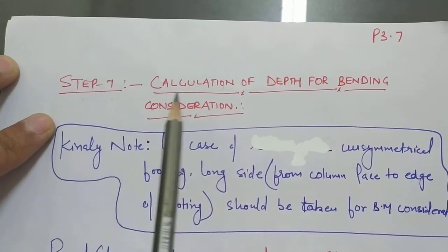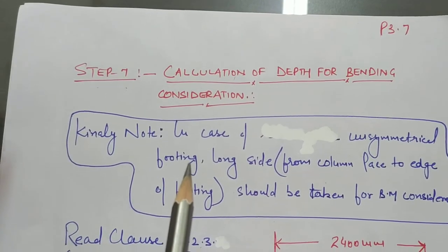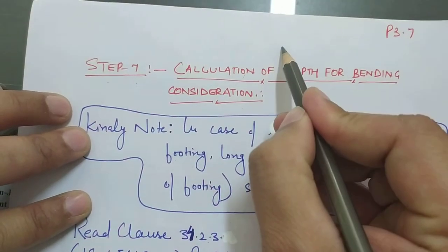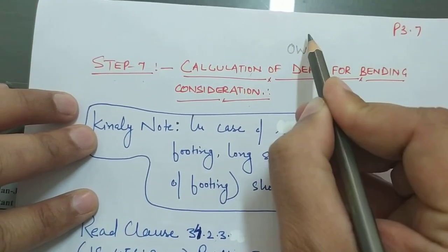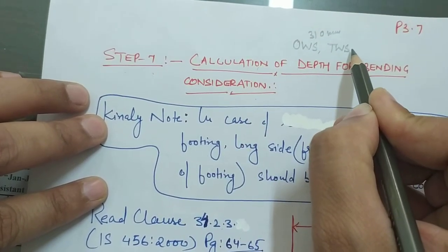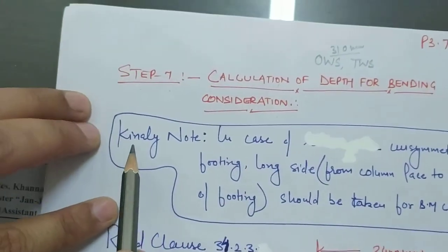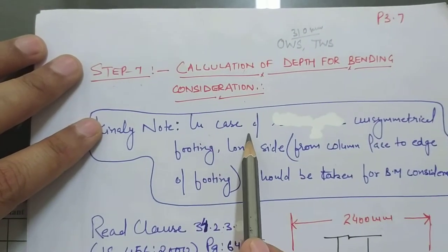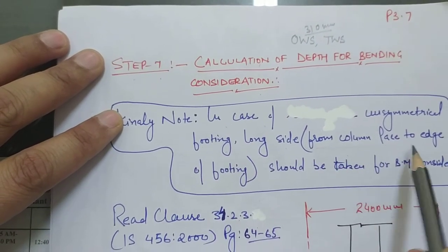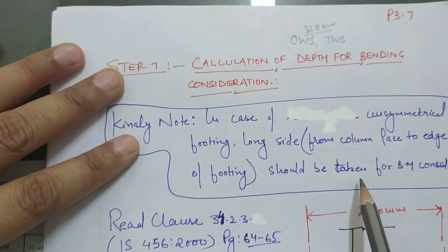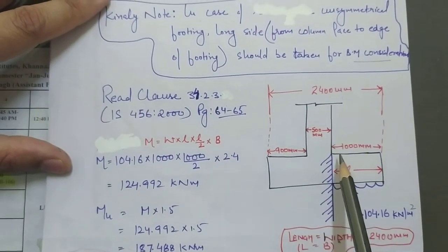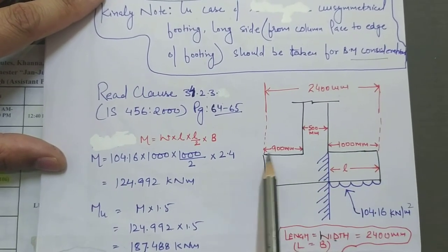Step seven is the calculation of depth from bending moment consideration. We check if the depth of 310 mm is sufficient for bending. For an unsymmetrical footing, we take the longer side — the greater distance from the column face to the edge of the footing — for the bending moment calculation. In our footing, the right face extends farther than the left face.